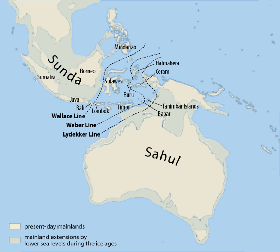Botanists often include Sundaland, the adjacent Philippines, Wallacia and New Guinea in a single floristic province of Malaysia, based on similarities in their flora, which is predominantly of Asian origin. During the last glacial period, sea levels were lower and all of Sundaland was an extension of the Asian continent. As a result, the modern islands of Sundaland are home to many Asian mammals including elephants, monkeys, apes, tigers, tapirs, and rhinoceros.